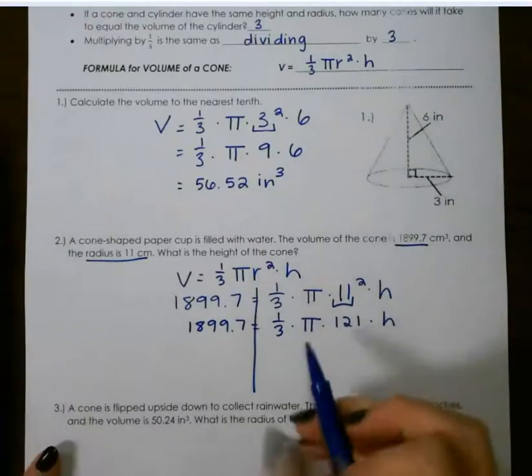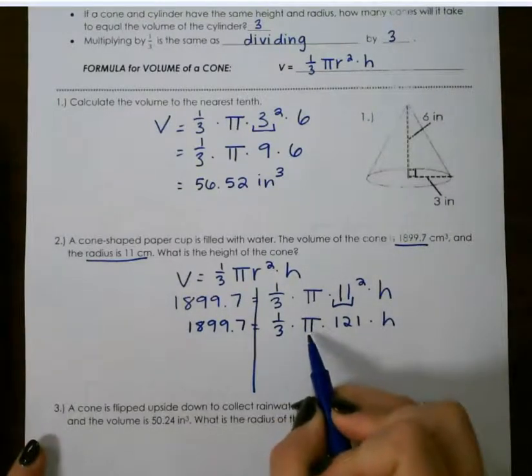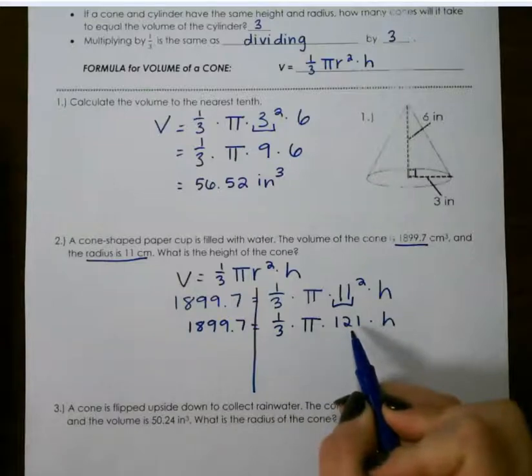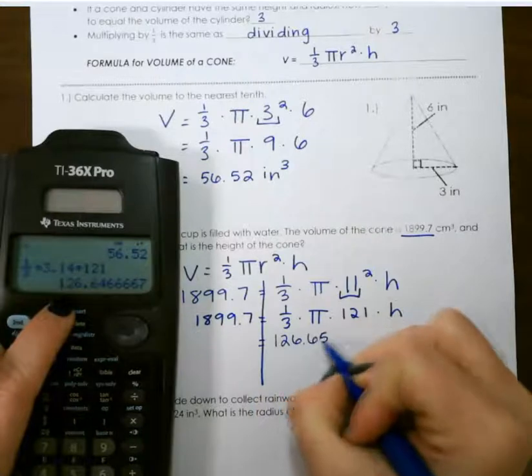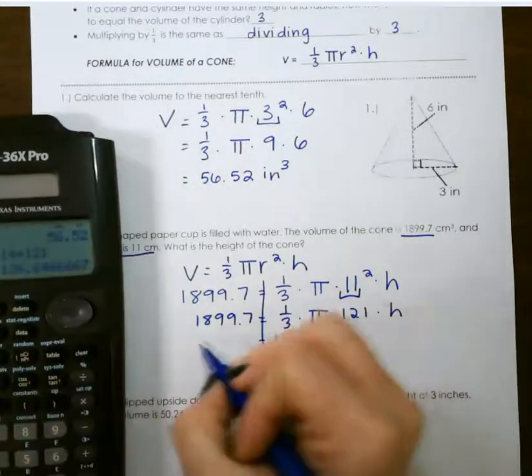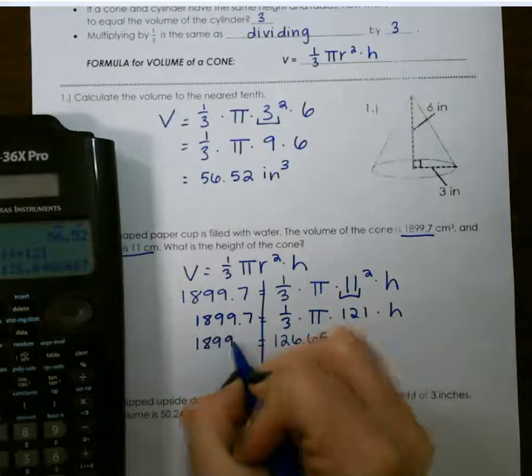Then I'm going to multiply 1 third times pi times 121, which is going to give me 126.65 times h, with our volume on the left-hand side.